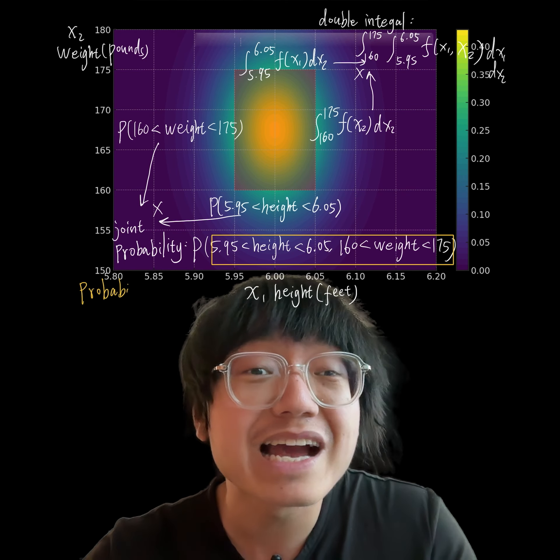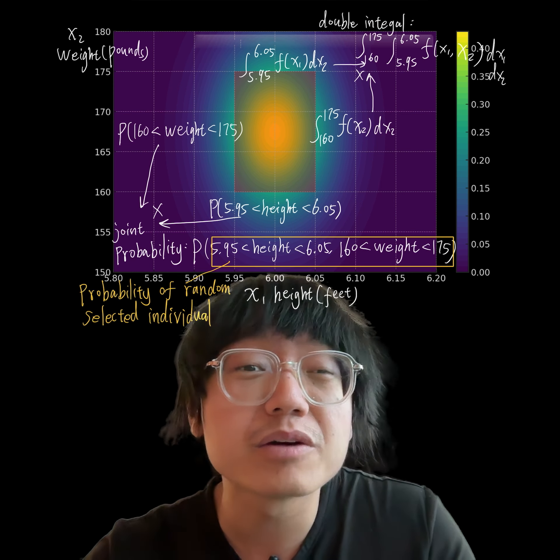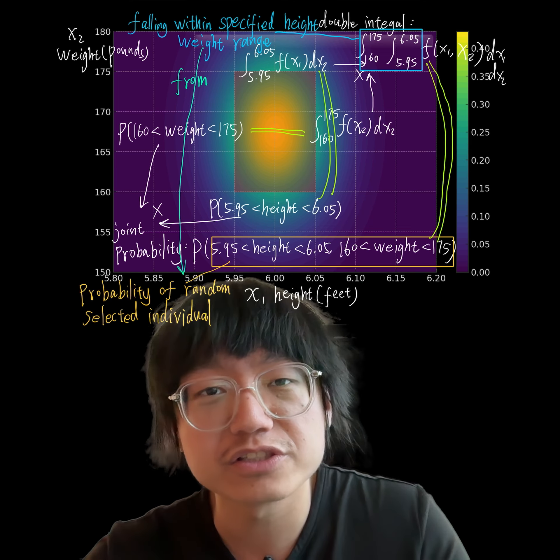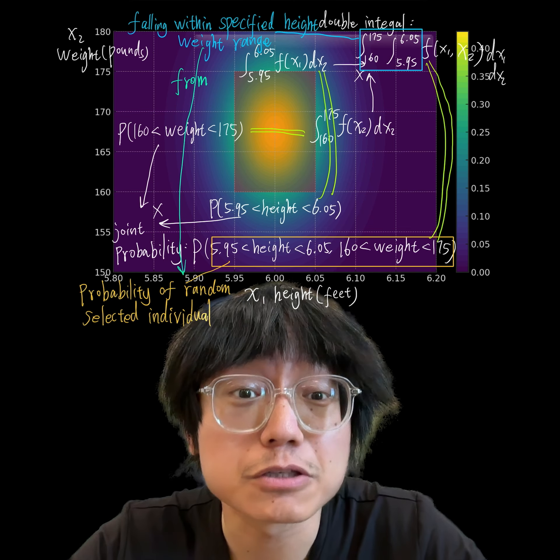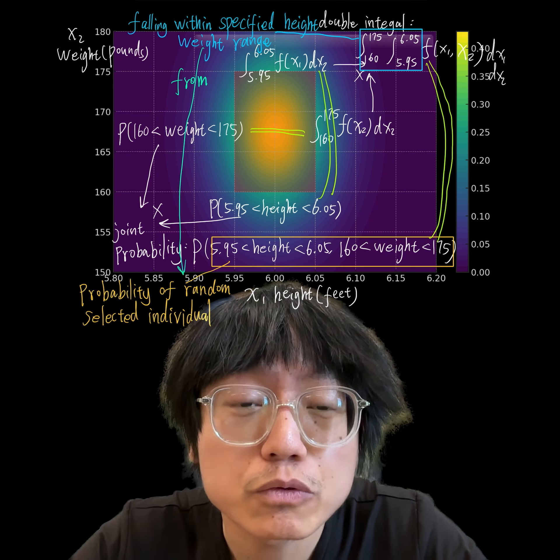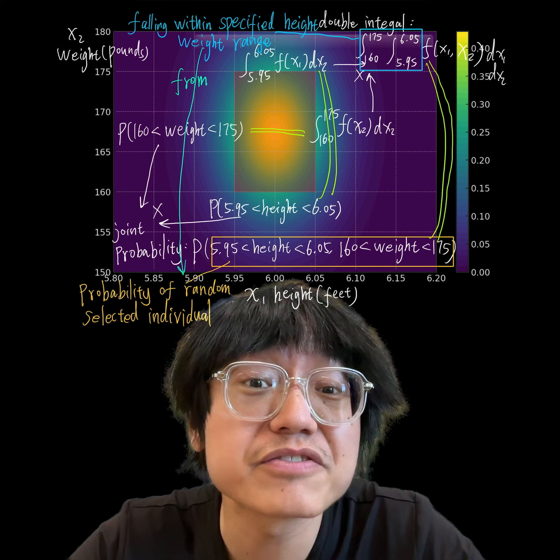This formula calculates the probability of a randomly selected individual from this population falling within the specified height and weight ranges. This double integral calculates the joint probability over these intervals, summing up the probability density within this specified rectangle.